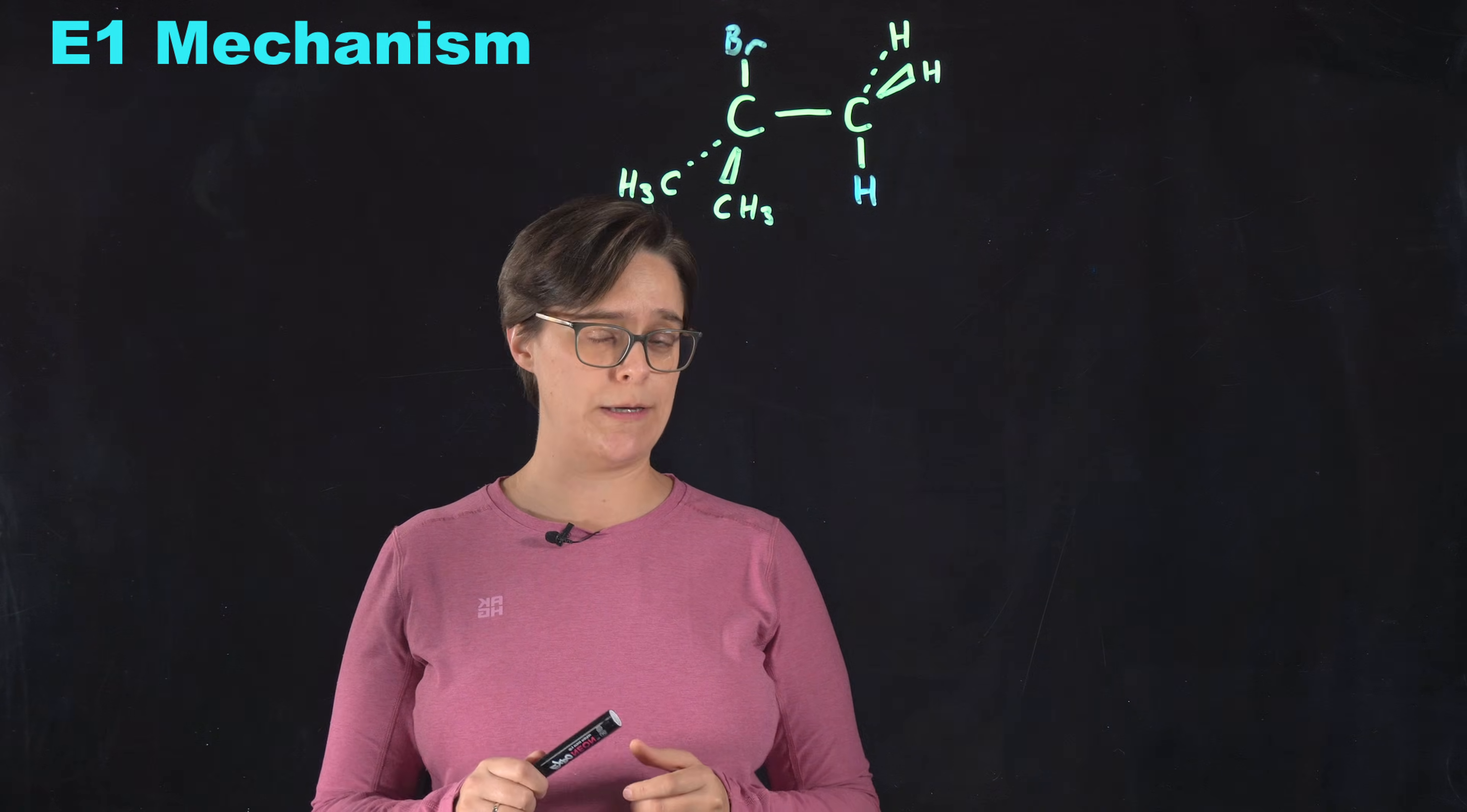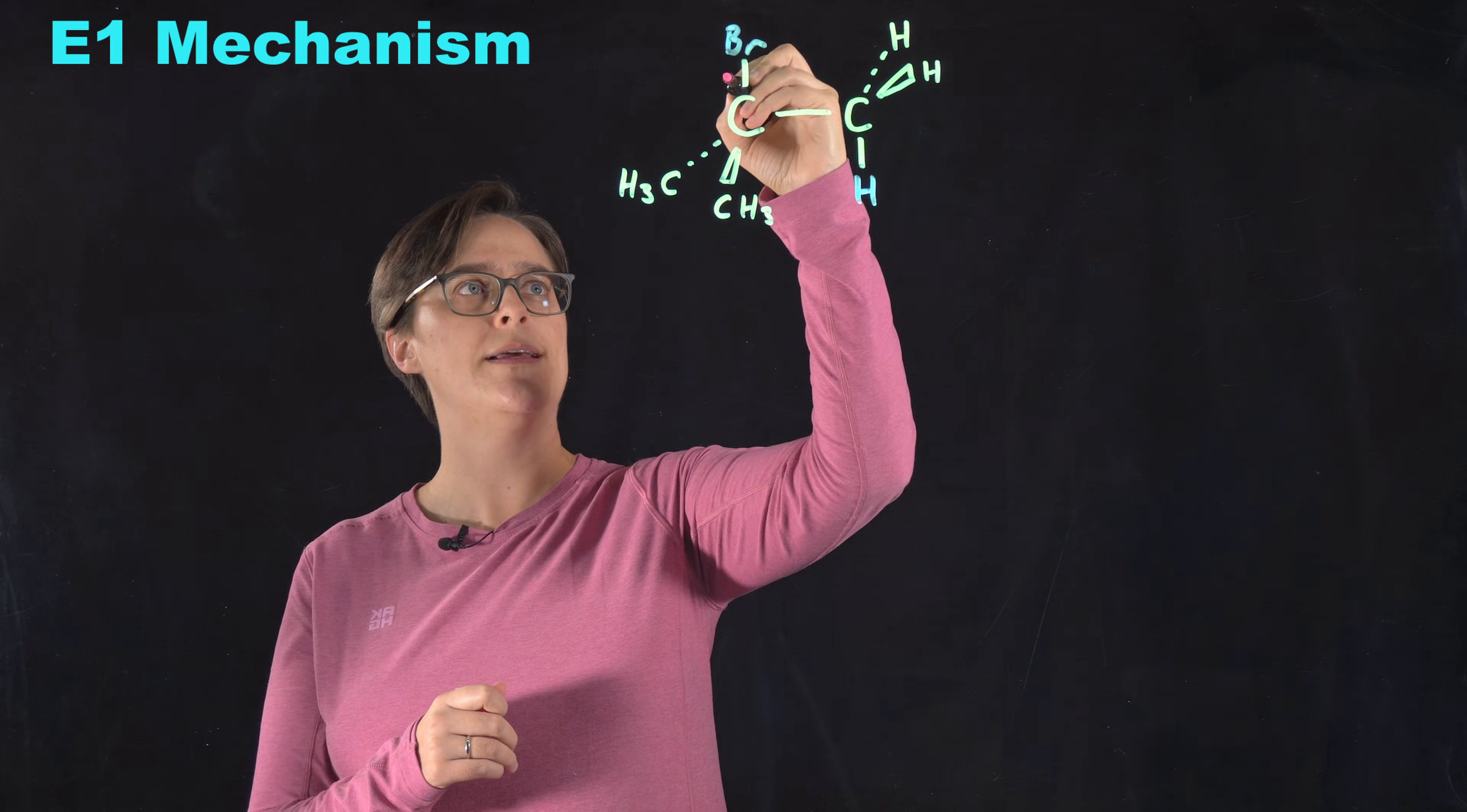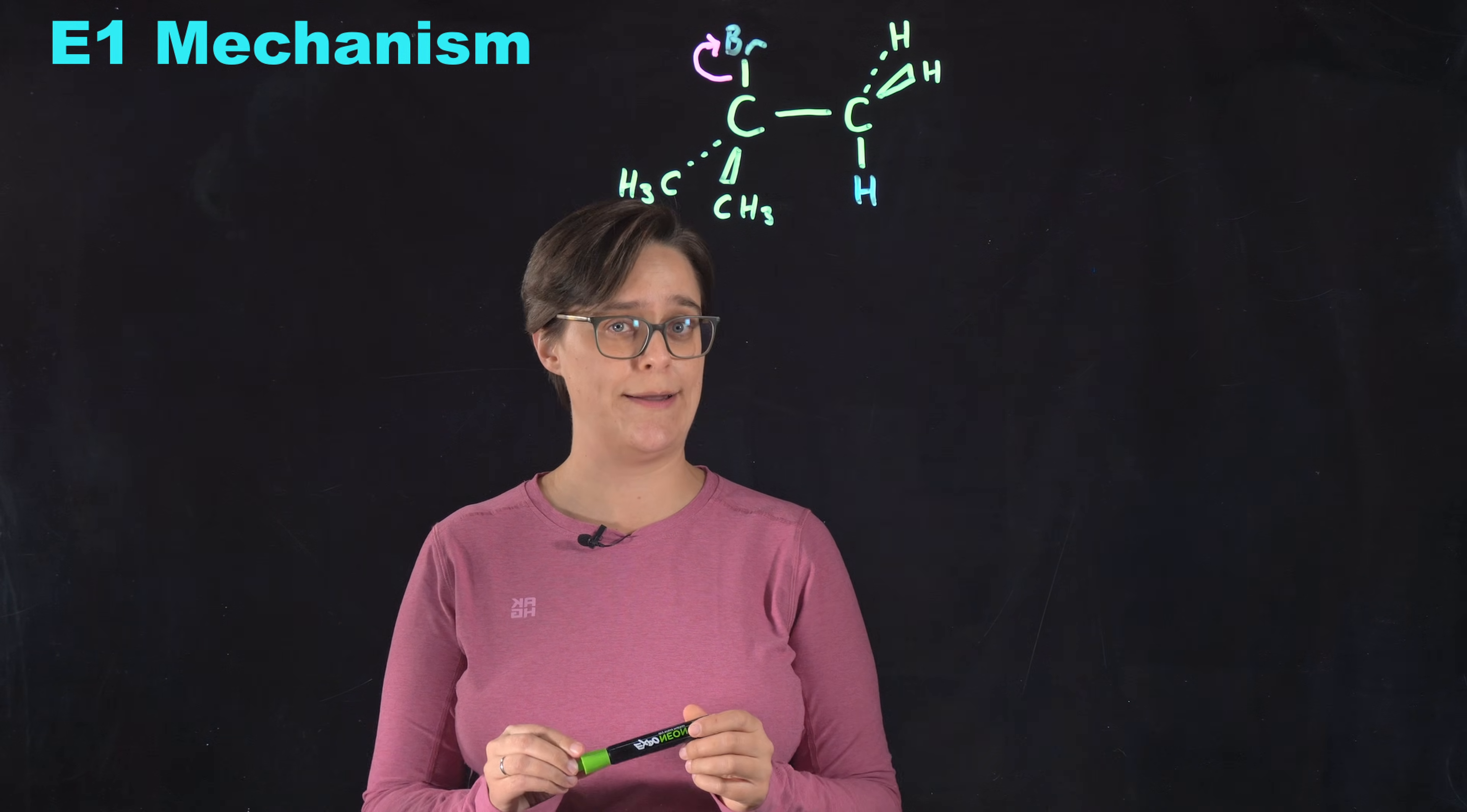But this very first step that occurs is the rate determining step. We see that the electrons in the bond between the leaving group and the carbon are going to be pulled more towards that leaving group. So we need a curved arrow from those electrons to this leaving group with two barbs, because two electrons are moving. When this happens, that bond is going to break, and we are going to form a carbocation.